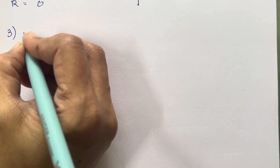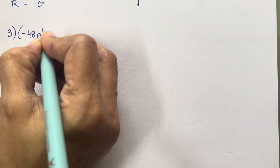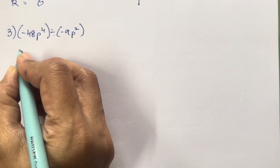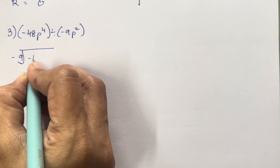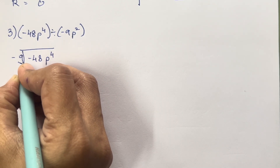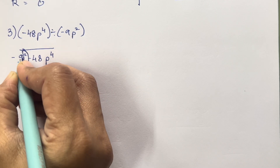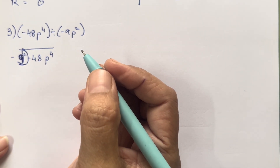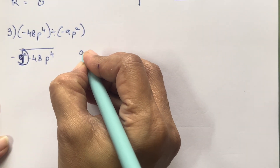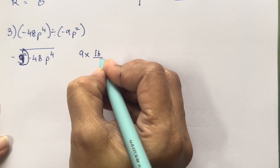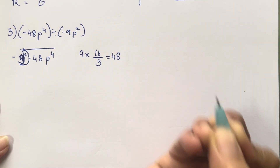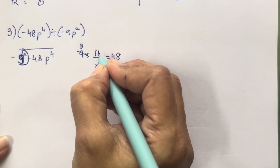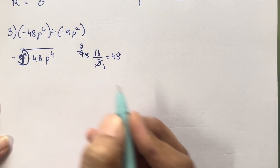Let's move on to the next sum: minus 48p⁴ divided by minus 9p². Don't get confused with the variable — it is very easy. Minus 48p⁴, here p² is 9. Now 48 will not come in the 9 times table, so what we have to do is multiply 16 over 3, then we are going to get 48. So 3 into 16 is going to be 48.